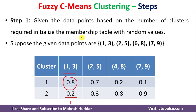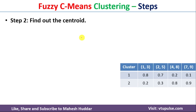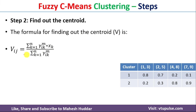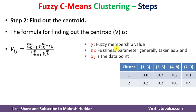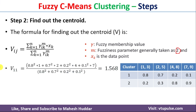Once you initialize the membership table, the next step is to calculate the centroid using this formula: V_ij equals the summation from k=1 to n of (mu_ik raised to m multiplied by x_k), divided by the summation from k=1 to n of (mu_ik raised to m). Here mu is the membership value, m is the fuzziness parameter (usually set to 2), and x_k is the given data point. Since each data point has two components, we need to calculate each component of the centroid separately.